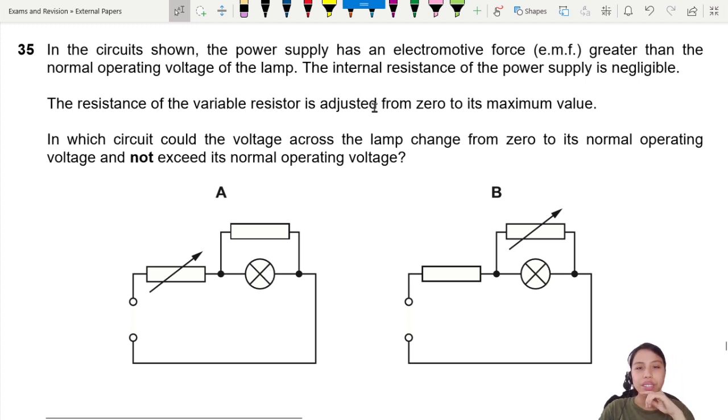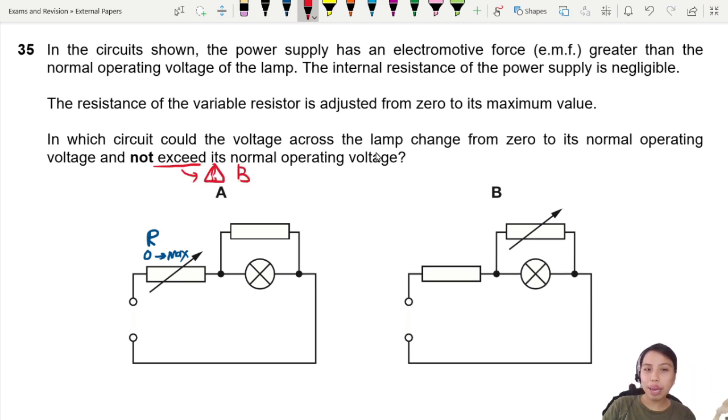The resistance of the variable resistor is adjusted from zero up to maximum. So R, these fellas, I'm just going to label this, this resistance can change from zero to maximum value, don't know what that is. So in which of the circuit could the voltage across the lamp change from zero to normal and not exceed normal operating voltage? See the danger with exceeding is, if you exceed, warning, you might blow your light bulb, explode, boom, because too much voltage supply already.